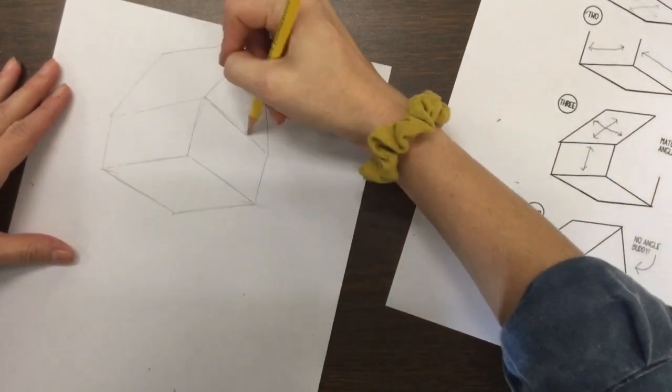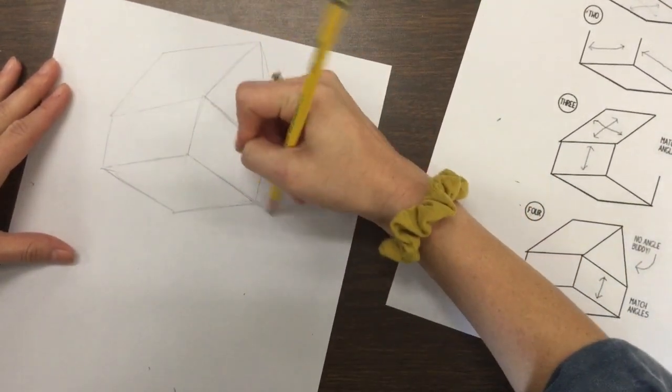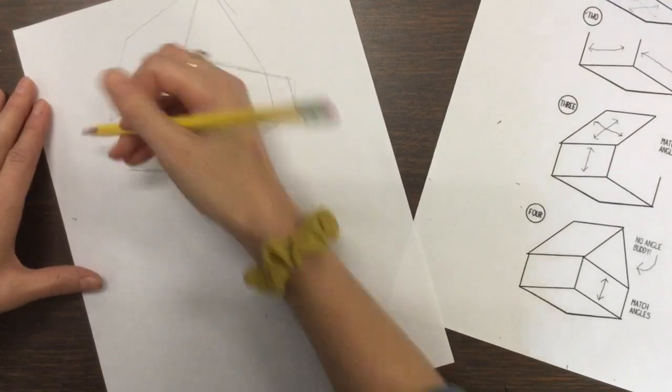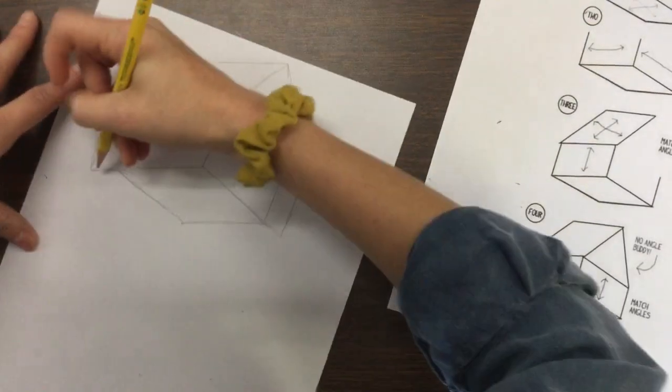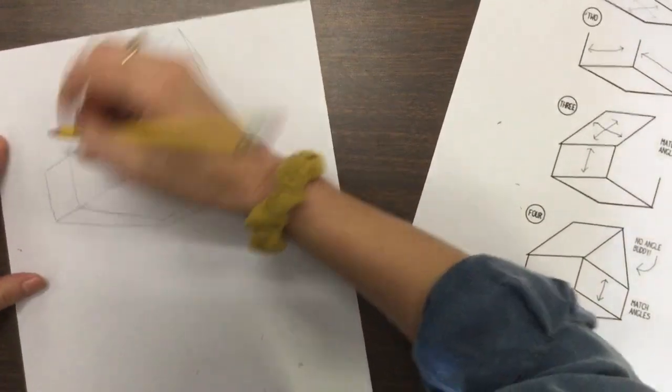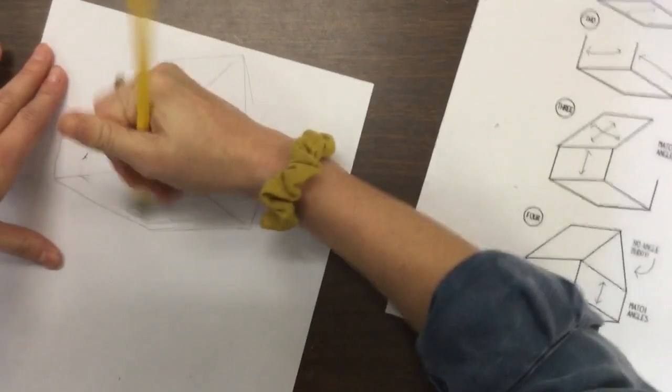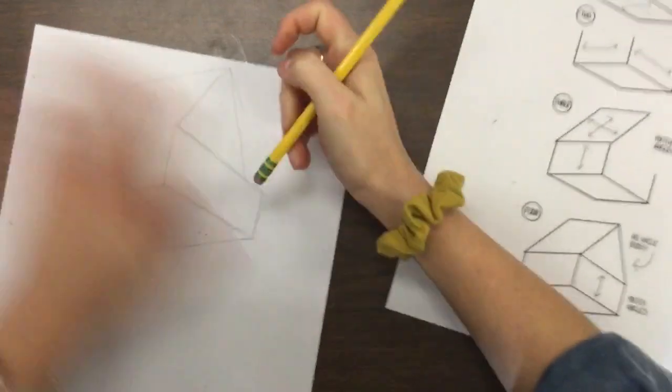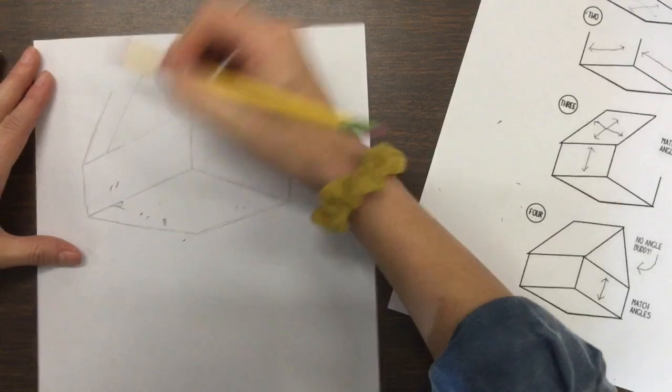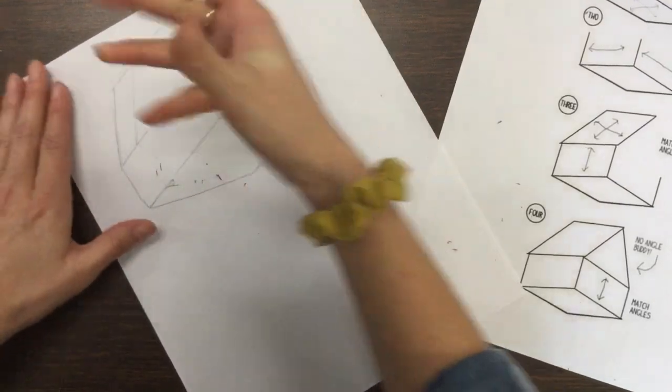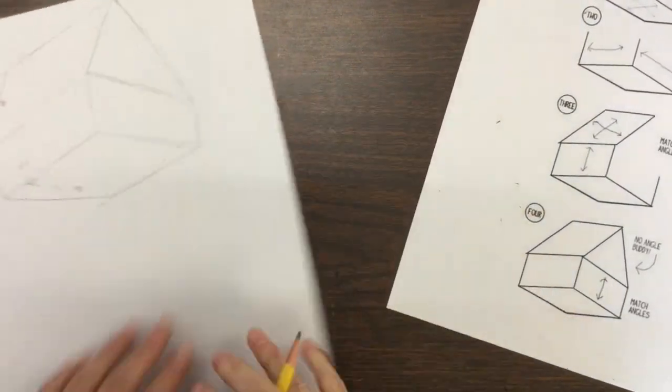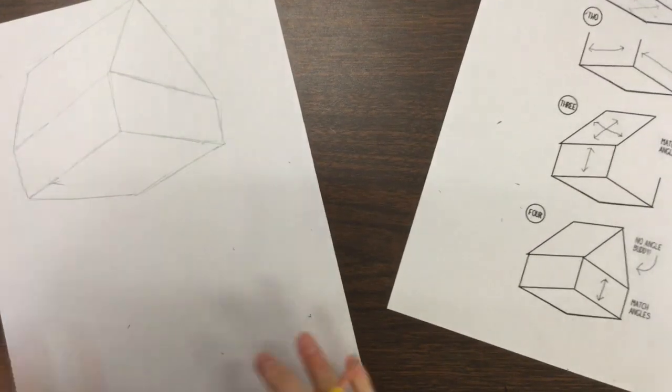So I can what I can do instead of erasing and restarting. I can make my angles a little bit longer. So I'm just going to extend it out. So I'm just making it a little bit bigger for me. There. So now it's about the size of my hand. There we go. So I have my treehouse ready.